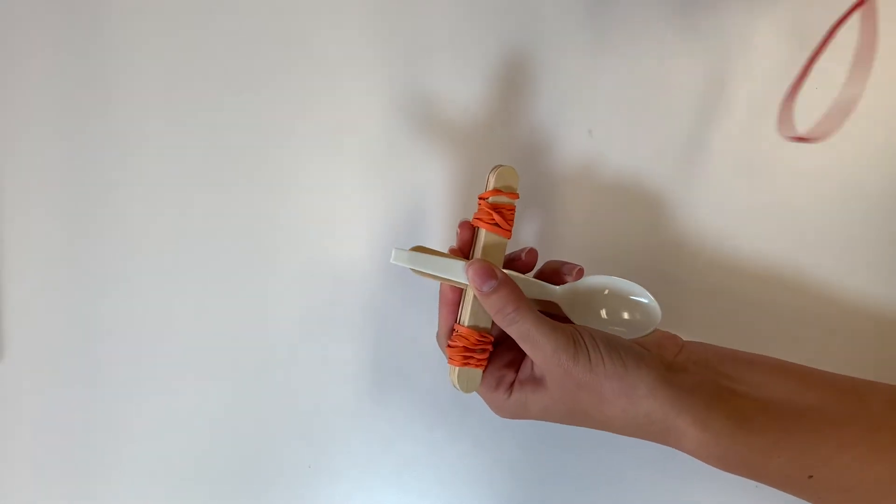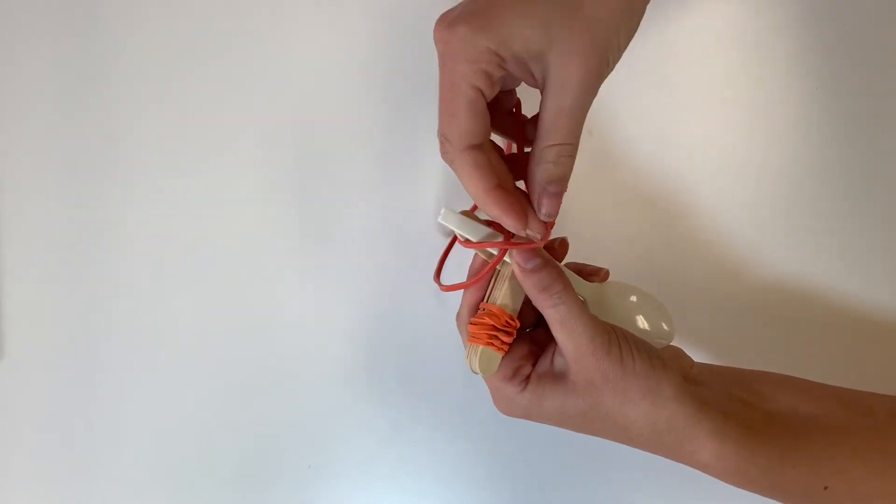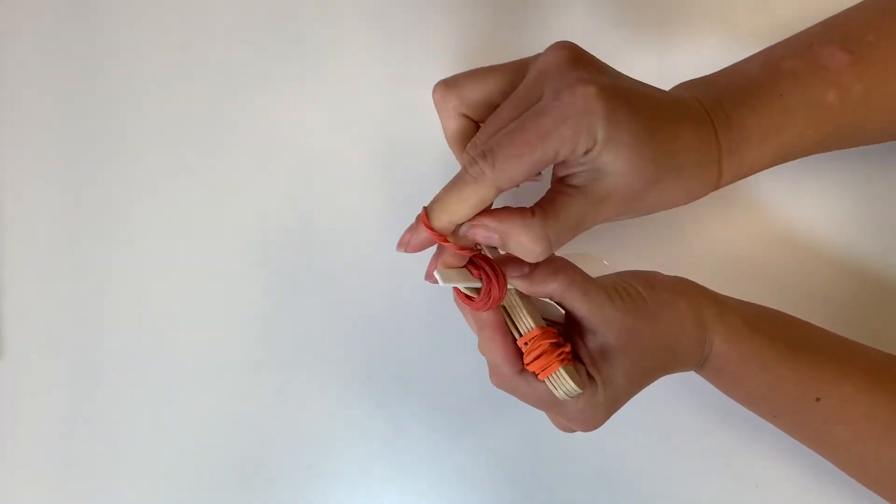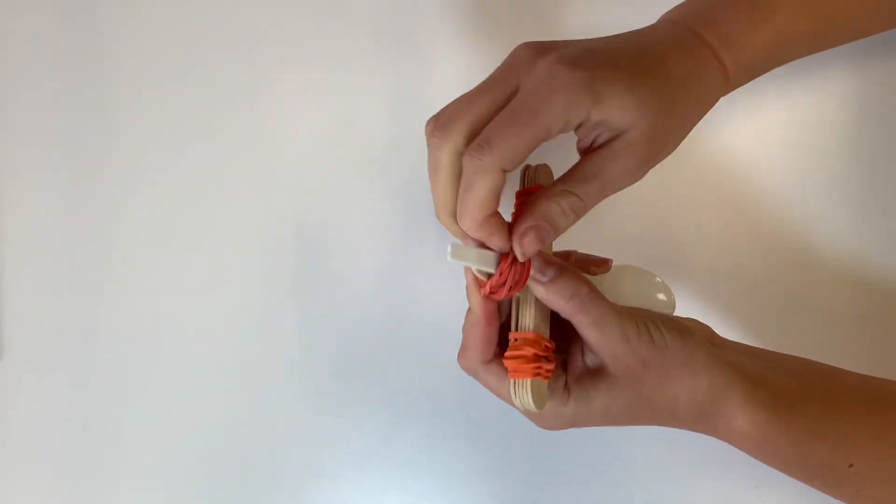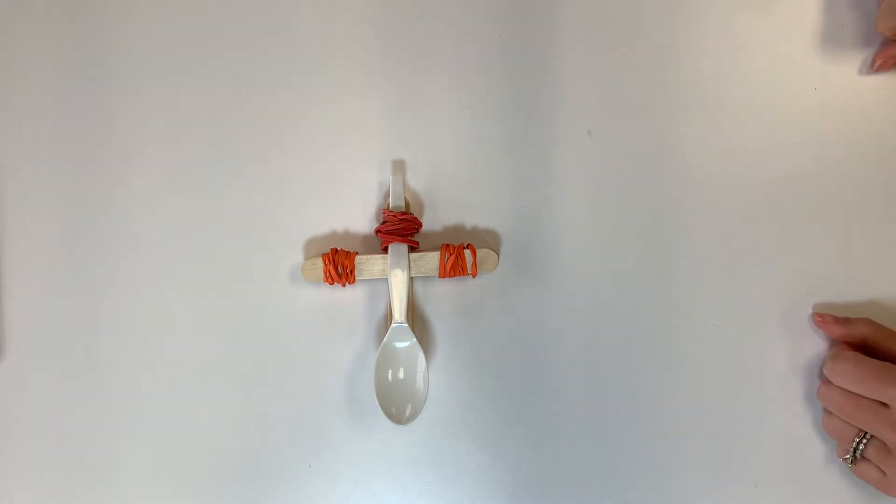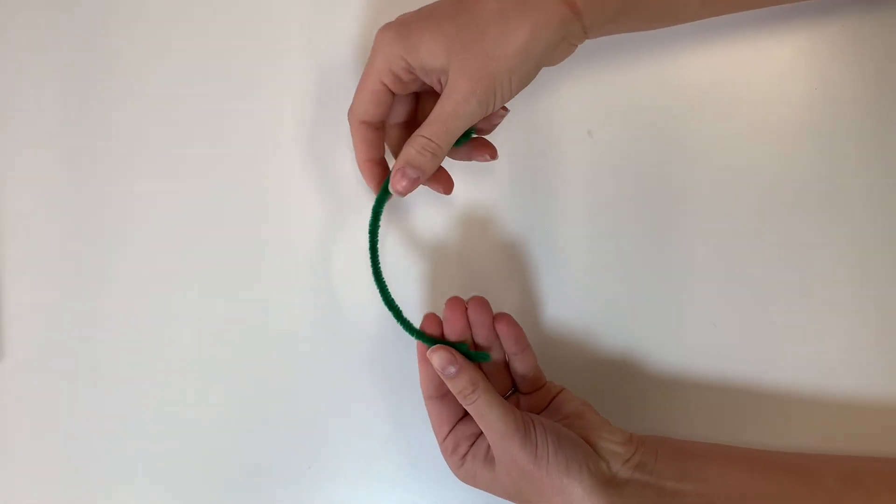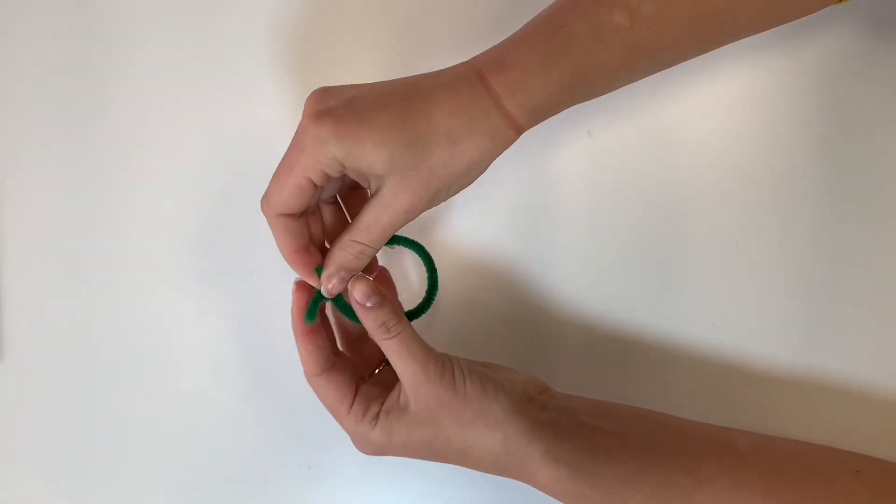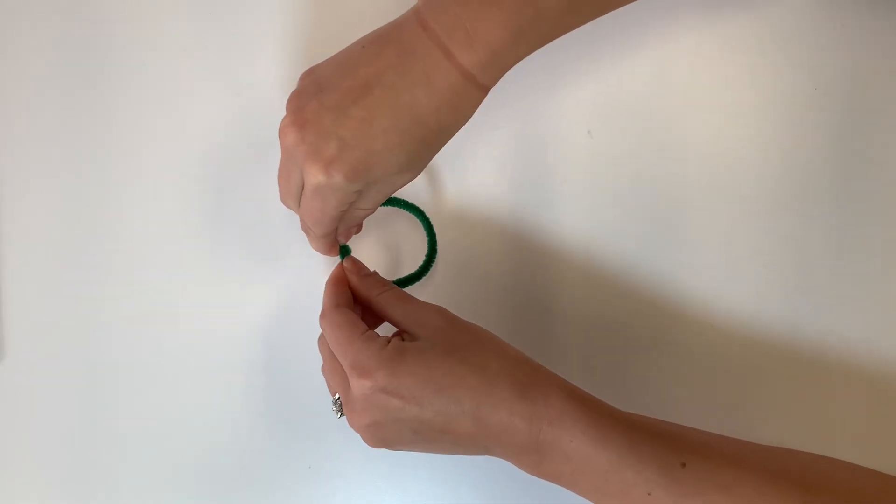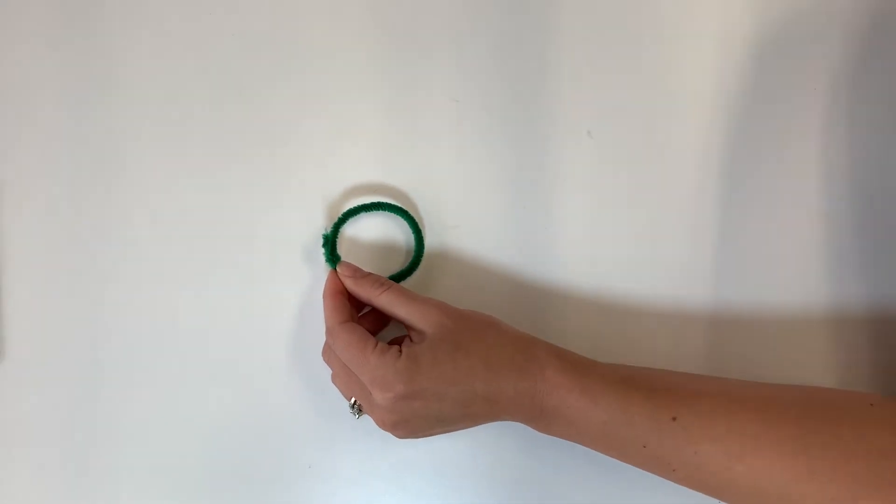Now the catapult is complete. For the hoop, take one pipe cleaner and form a ring that will form the hoop, twisting the ends together.